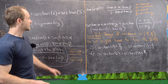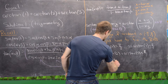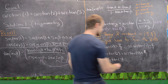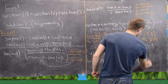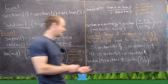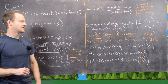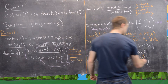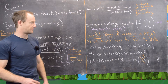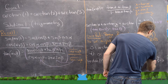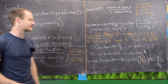Using our derived formula, arctan of 2 plus arctan of 3 equals arctan of (2 plus 3) over (1 minus 2 times 3), which is arctan of negative 1. Plugging directly into the inverse tangent, arctan of negative 1 equals negative pi over 4. But that's not a valid value for arctan(2) + arctan(3), so we fix it by adding pi, giving us 3 pi over 4.